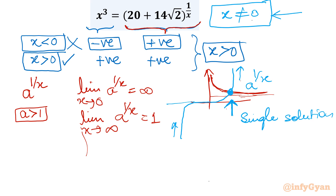Now the question is: what methods are available? The first method is Newton-Raphson — frame the function f(x), check a few values to find where the sign changes, and narrow down the interval. The second method is the Lambert W function, which is very simple, and that is the one I will show you.